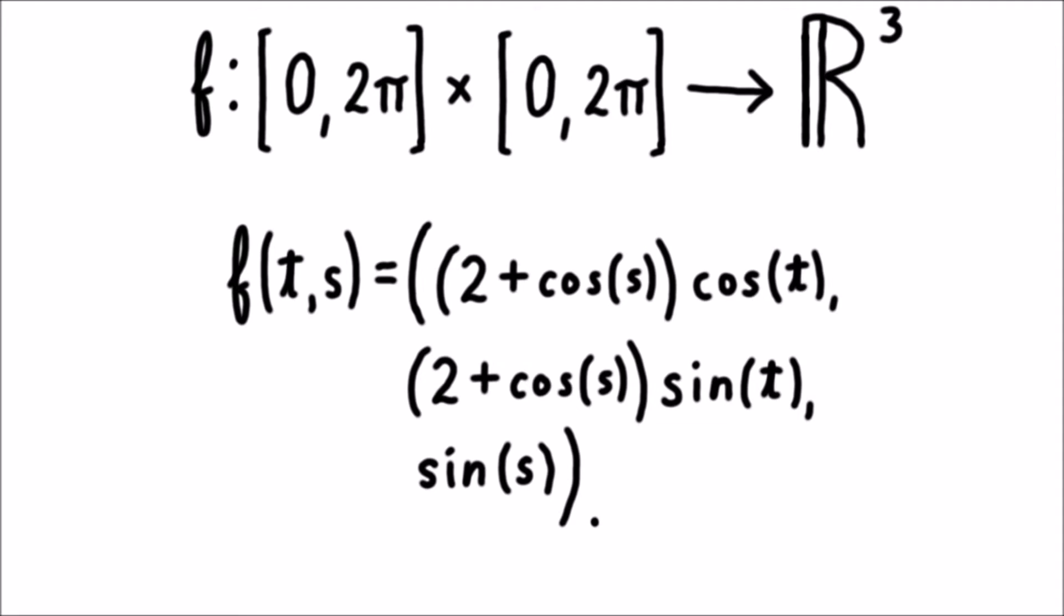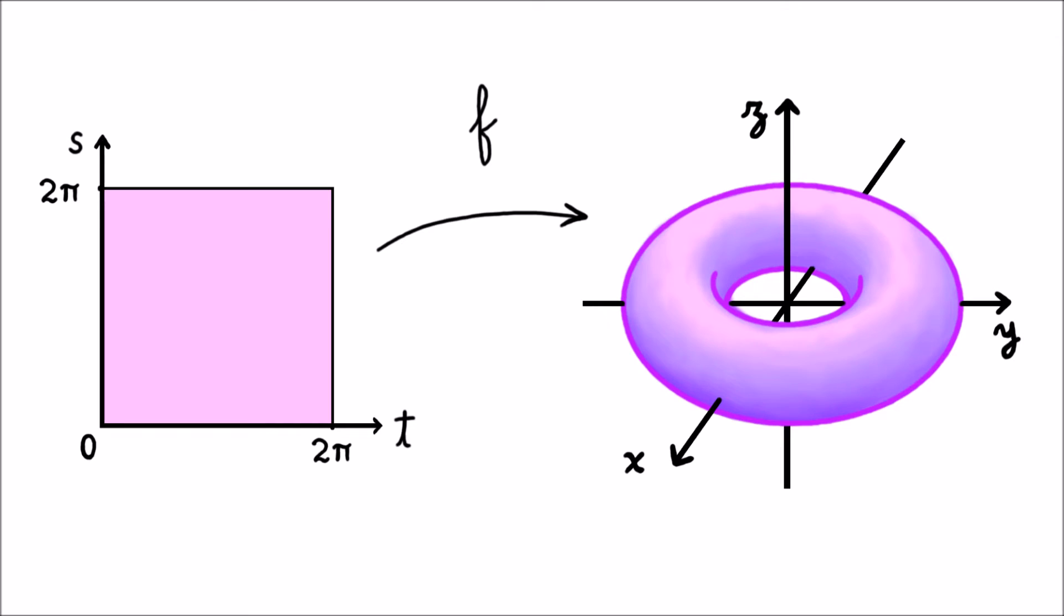The x-coordinate of this point is given by (2 + cos s) × cos t. The y-coordinate is given by (2 + cos s) × sin t, and the z-coordinate is given by sin s. This might look like a jumble of symbols, but let's think about what this parametrization is doing to the square.